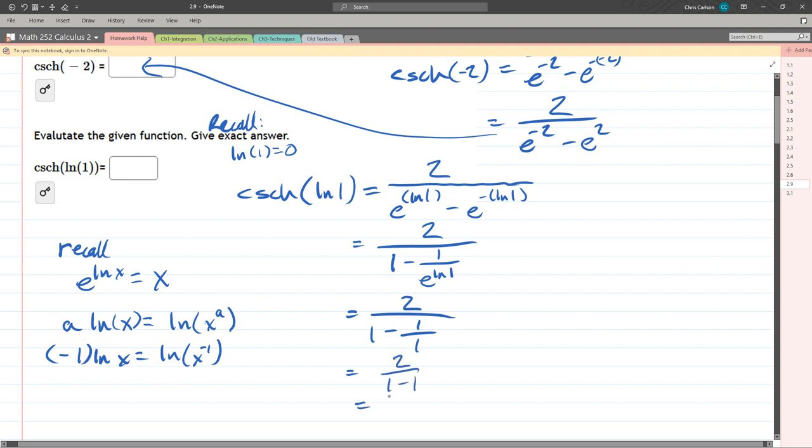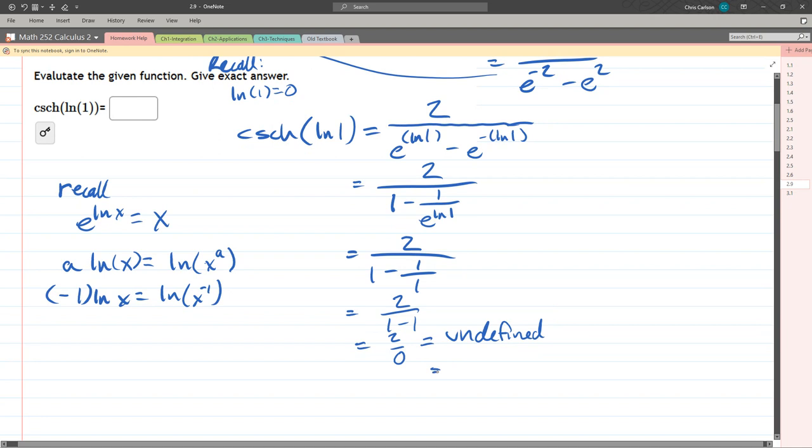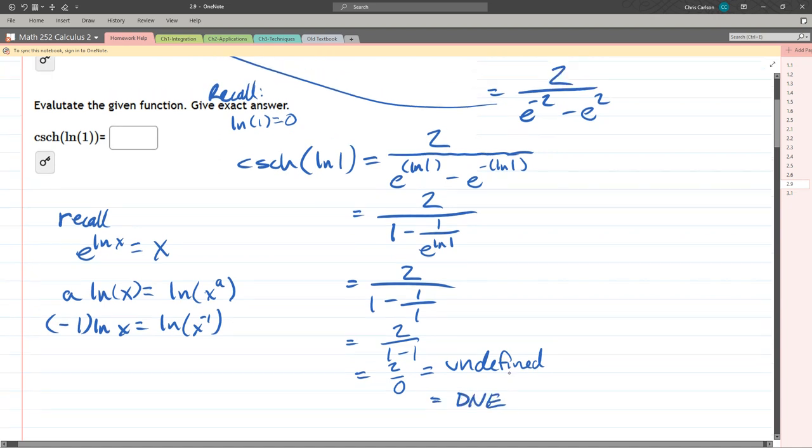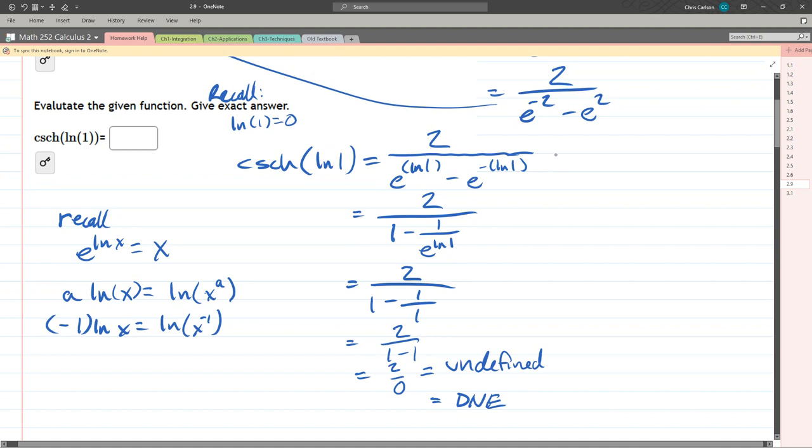That is what we call undefined, which I believe is undefined. How do we write undefined? D-N-E, I think, is how we're going to enter that. It does not exist. There's no such answer. If we went the other way I alluded to, where we use the exponential, we're going to move that negative up here as a power.